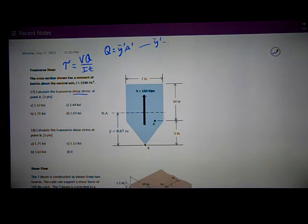The distance from the neutral axis to the centroid of A prime, which is that next number.